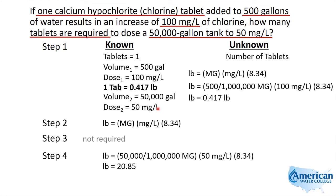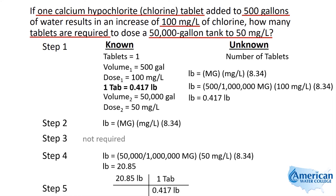So if each tablet added gives us 0.417 pounds and we need a total of 20.85 pounds, we divide 20.85 by 0.417 — and that will give us the total number of tabs. In this case, we need 50 tablets added to the 50,000 gallons, and that'll give us a dose of 50 milligrams per liter.